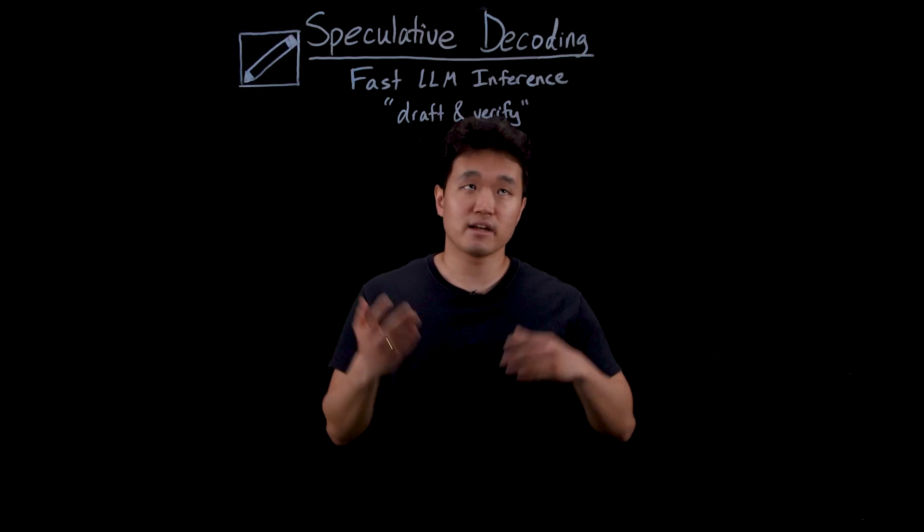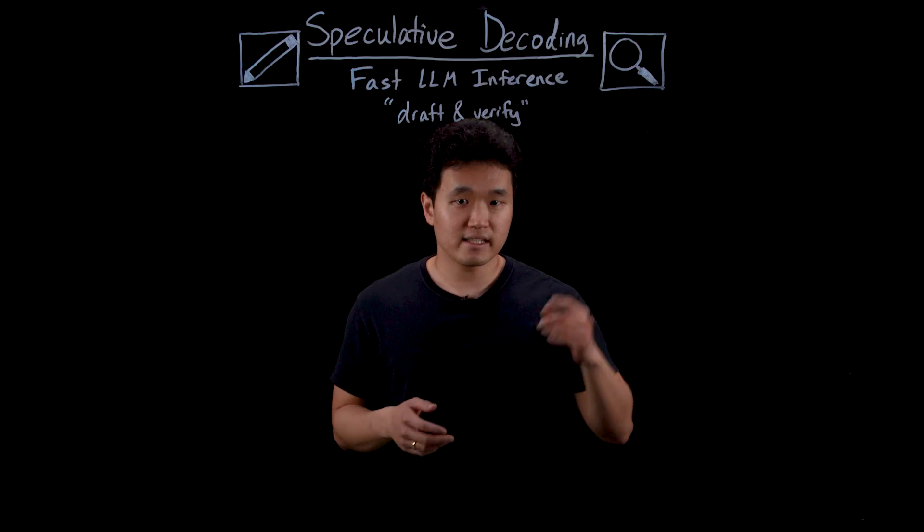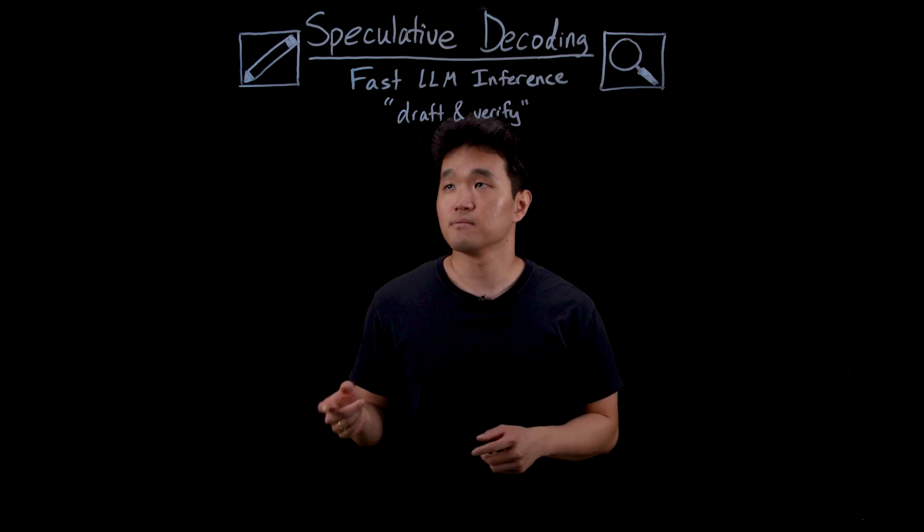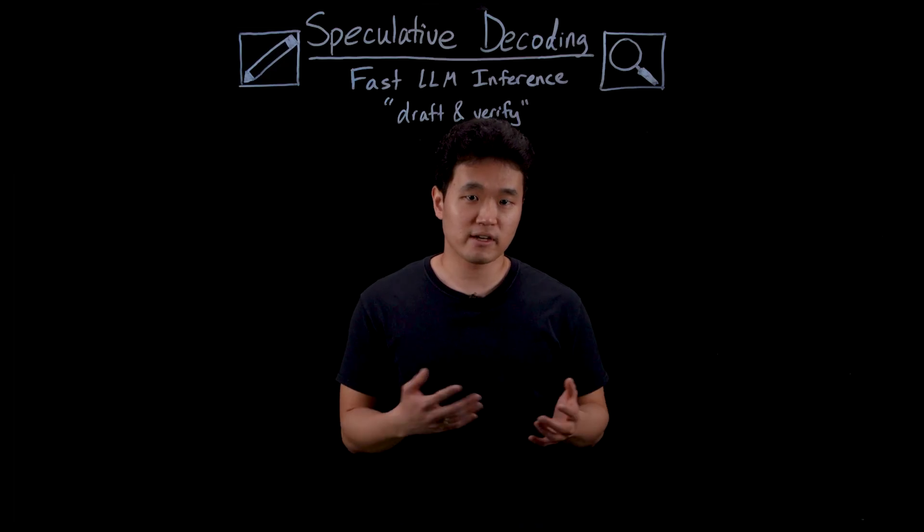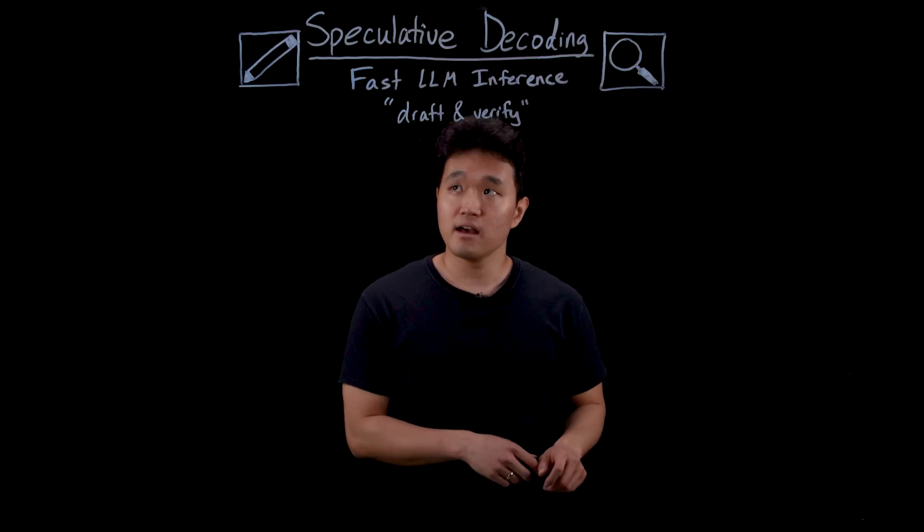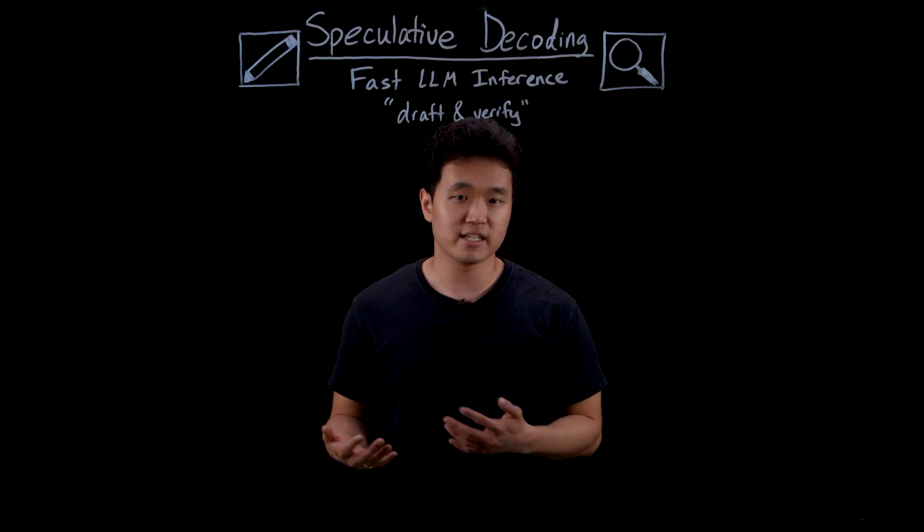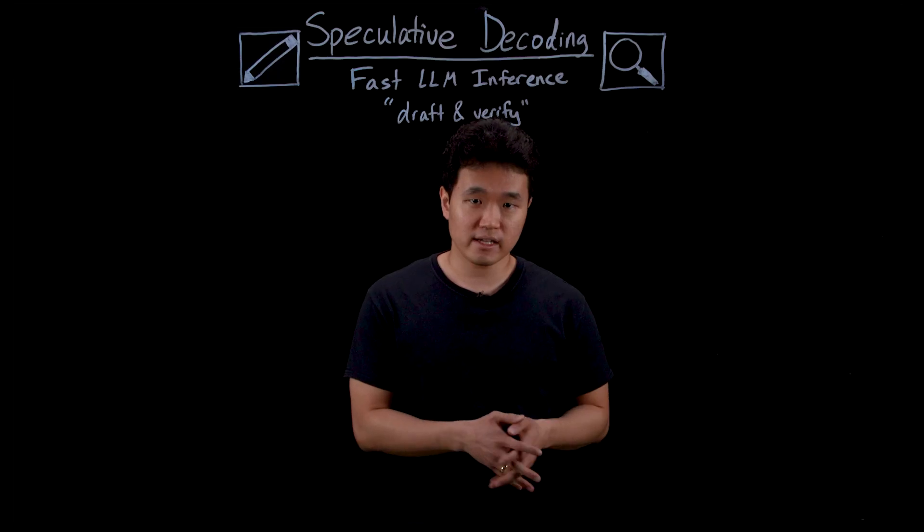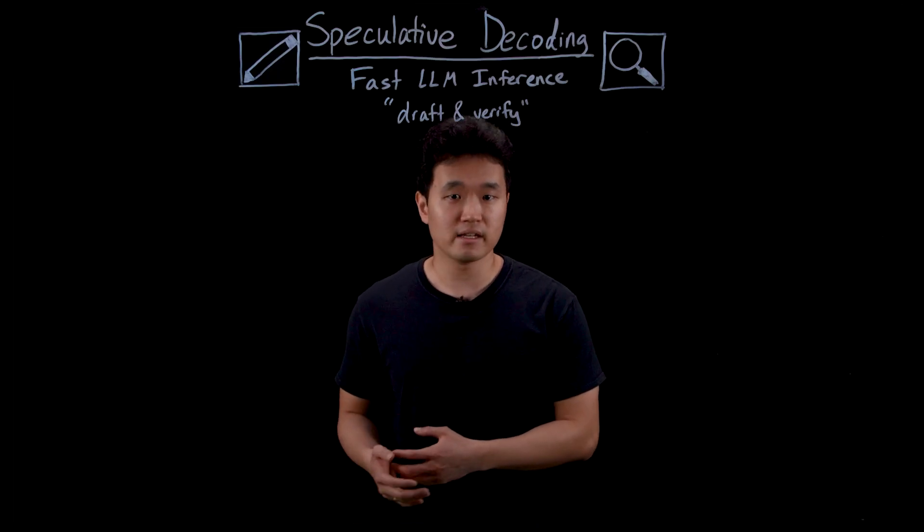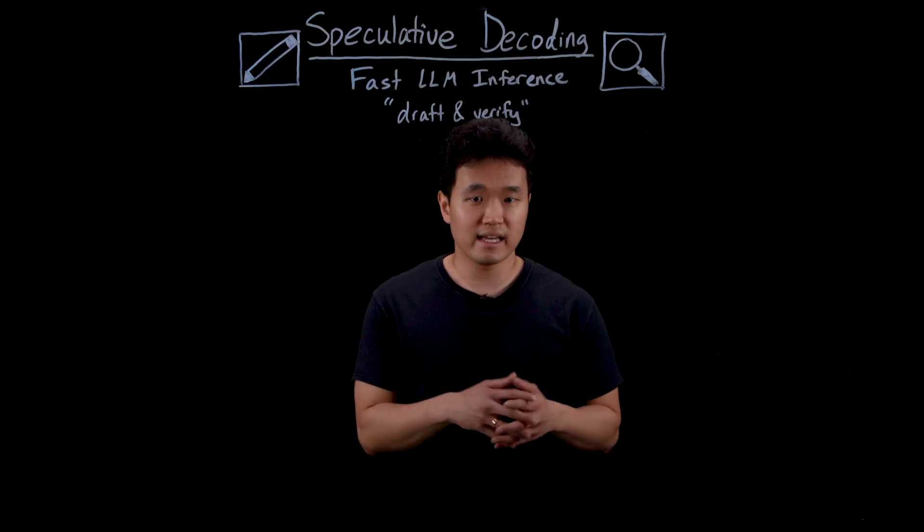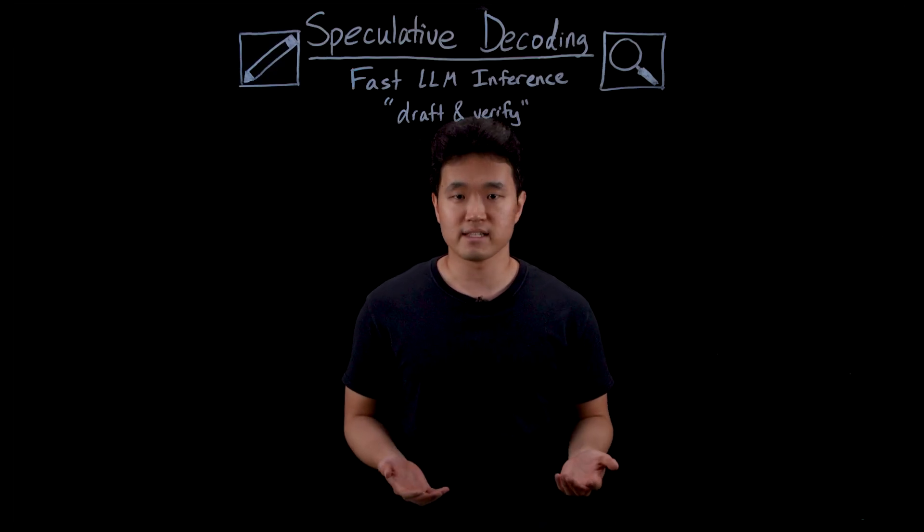Think of a writer and an editor. Imagine that the editor is a much faster typer and can mimic the writer's style. So to work smarter and not harder, the editor can draft a few words ahead while the writer double checks his work and makes any changes where appropriate. In the same way with speculative decoding, a smaller model is given free reigns to guess what words come next but stays grounded in a larger model who always verifies its output.